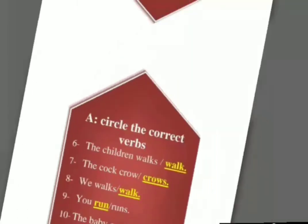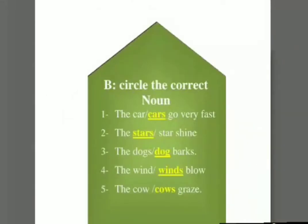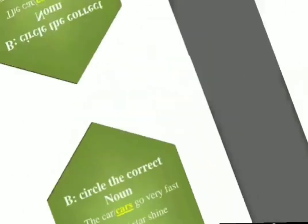Now we have another activity in which we have to circle the correct noun. The car or cars go very fast — answer is cars. The stars or star shines — correct answer is stars. The dog or dogs barks — correct answer is dog. The wind or winds blow — correct answer is winds. The cow or cows graze — correct answer is cows. You will have to circle the correct answer.